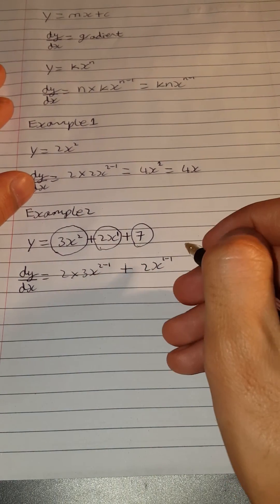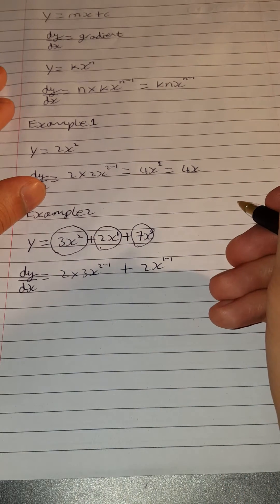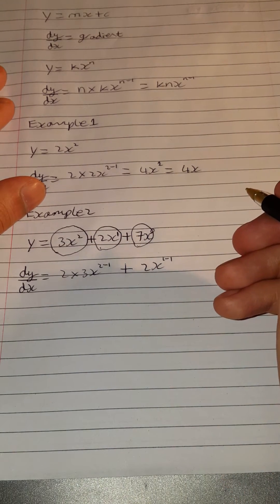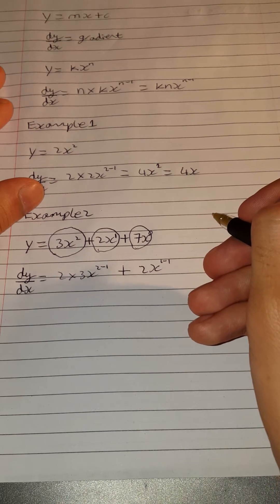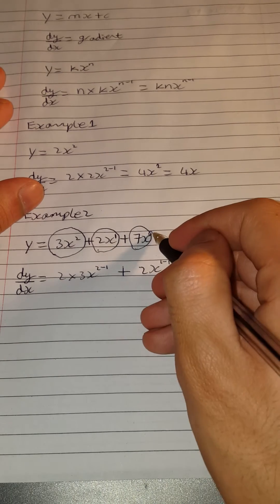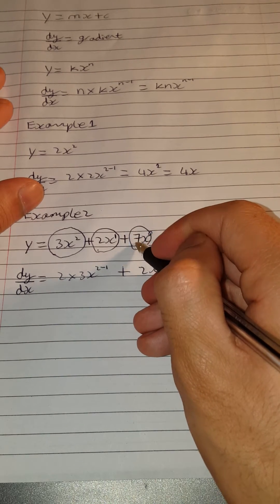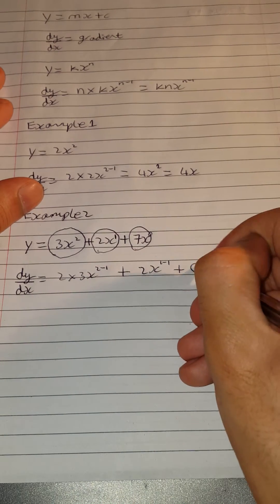But if we had x to the 0 next to it, x to the 0 is just 1, right? So 7 is the same as 7x to the 0. So what happens if we bring the power and multiply it here? Anything times 0 is just 0. So this part just becomes simply 0.